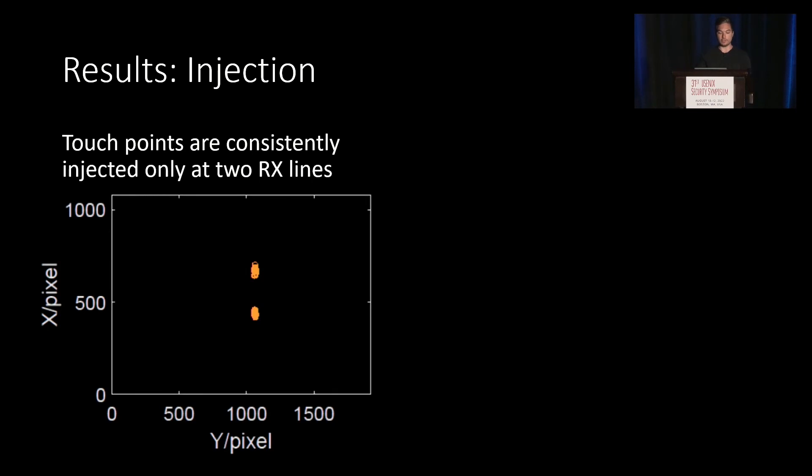So for our evaluation, we used the chip-shouter device with 120 pulses per second, and here on the left you see a smartphone in landscape mode, where we injected some multiple hundreds of touch points, always at the same area, on two consecutive RX lines.